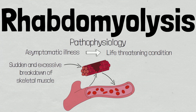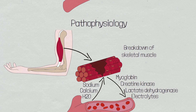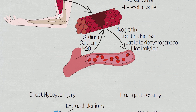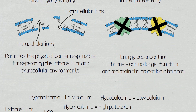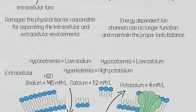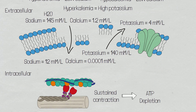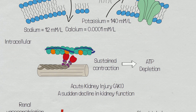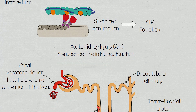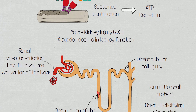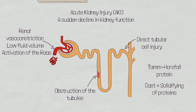To recap: rhabdomyolysis is a clinical syndrome involving sudden and excessive muscle breakdown causing the release of intracellular components into general circulation, as well as extracellular components moving into the intracellular space. Excessive muscle breakdown is caused by direct myocyte injury, failure of the energy supply, or both. Myocyte injury or ATP depletion results in excessive intracellular sodium and calcium levels, causing sustained myofibril contraction, damage to the cytoskeleton, and rupture of the cell membrane due to oedema. Causes can be traumatic or non-traumatic, and symptoms range from asymptomatic to life-threatening.